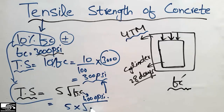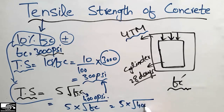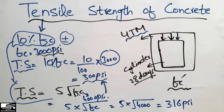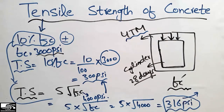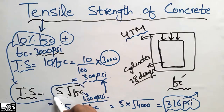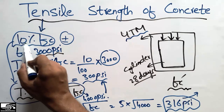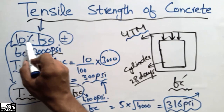...then the tensile strength can be found by 5 × √fc, where fc = 4,000 psi. Putting in the value of 4,000, the tensile strength comes out to be 316 psi. This is the way to find the tensile strength of concrete, since it cannot be found directly by any machine or device, but can be calculated using 5√fc or the 10 percent of compressive strength rule.